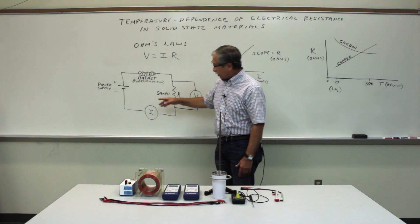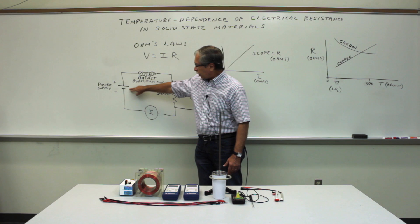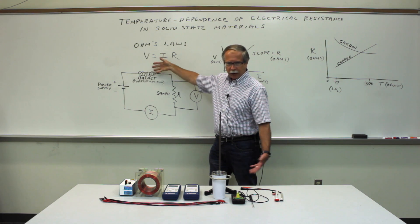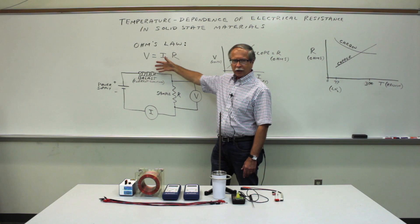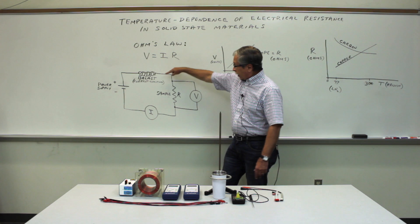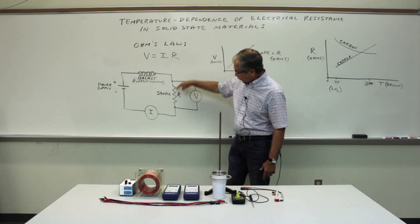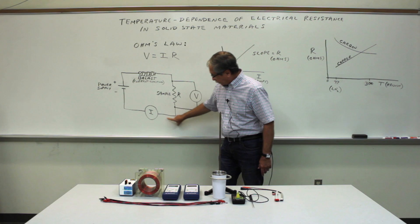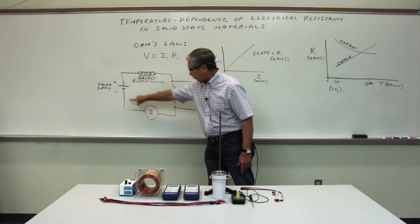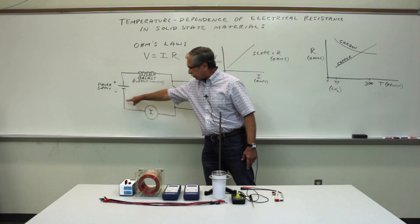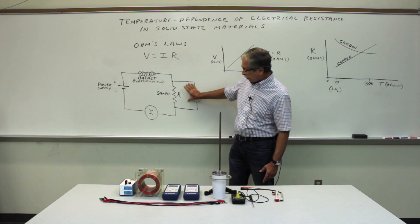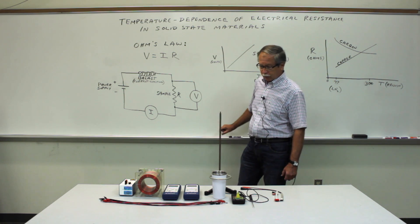We have a circuit that looks like this: a power supply in series with a current-limiting ballast resistor. That's simply to protect the power supply from blowing a fuse if you turn it up all the way. The current passes through the sample whose resistance you want to determine, and then through a current meter, and back to the power supply. So this is the series circuit for measuring the current, and we have a voltmeter in parallel across the sample to measure the voltage.